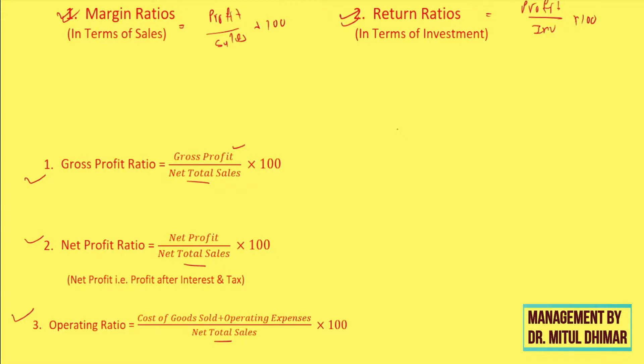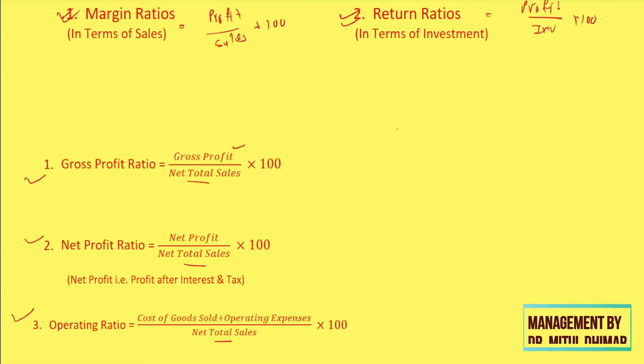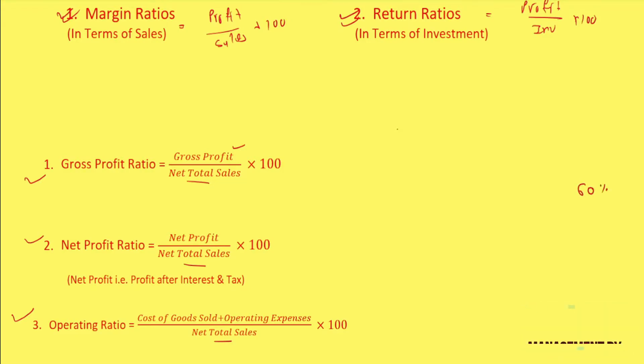The third ratio is operating ratio. This ratio tells us how much our operating expenses are against sales — it is actually an expense-to-sales ratio. Even if we find how many expenses we are having against our sales, ultimately we will know the profitability. For example, if this ratio is 60%, that means against sales of 100 rupees, 60 rupees are my operating expenses, so 40 rupees is my operating income.